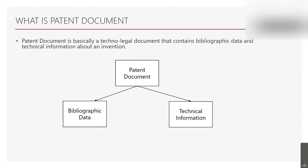Our first topic is about the patent document. A patent document is basically a techno-legal document and it is a major source of technological and competitive information. Approximately 80 percent of the available technical information is published in patents. Therefore, it is equally important to know how to read a patent document as well as how to fetch one. Patent information is useful for any person — a teacher, student, professor, or anyone who wants to work on new technologies or improve existing ones.